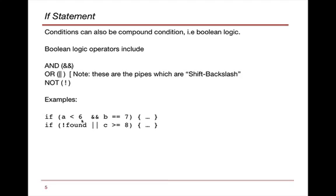For example, if A is less than 6, if this evaluates to true and B equals equals 7, then we'll execute these statements. Another example is if not found. Found is a Boolean variable, and if we use the exclamation point, we're going to negate that. Then we see if that's true or if C is greater than or equal to 8 is true. If either one is true, we execute the statements within the braces.